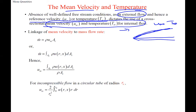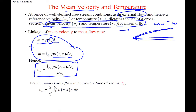Mean velocity was defined in fluids. If we look at mass flow rate — m-dot equals rho times v times A — that's the mean velocity times cross-sectional area. If we wanted to find the mean velocity from how velocity changes in X and R, we integrate across the cross-section. Setting those two equations equal lets us solve for mean velocity. For incompressible flow in a circular tube, we can simplify: density comes out of the integral and cancels, giving us the mean velocity equation.